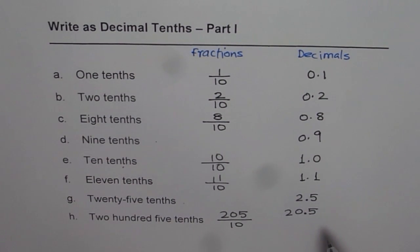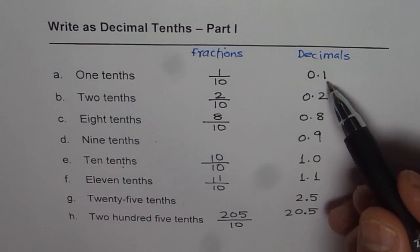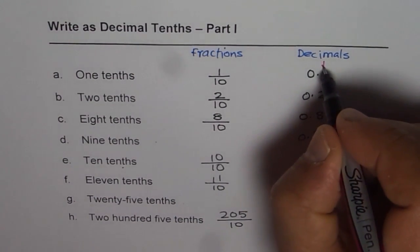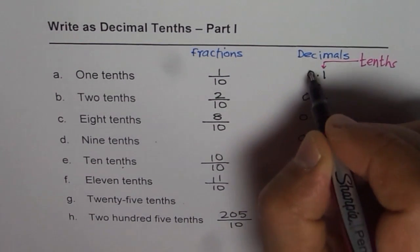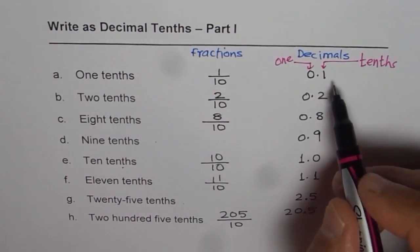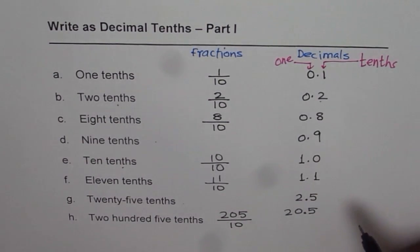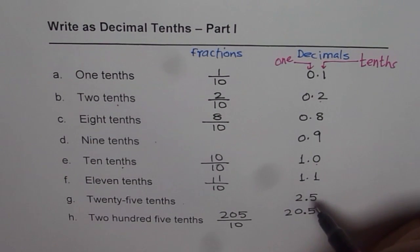So whenever you are writing numbers in decimals and you have tenths here, that means there will be a digit in tenths place. Now as you know, this is your tenths place, and this one is ones. So whenever we have tenths here, we should have a digit in tenths place. It could be zero. That is fine.